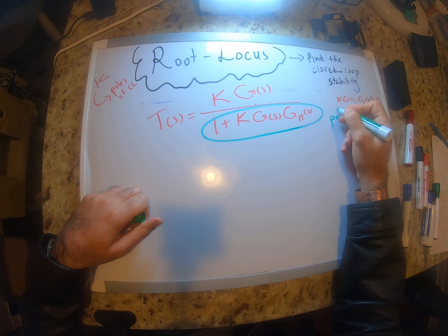Negative one in the complex plane sits at a specific location. This means the magnitude of K·G(s)·GH(s) must equal one, and the phase of K·G(s)·GH(s) must equal 180 degrees or negative 180 degrees — they are the same.